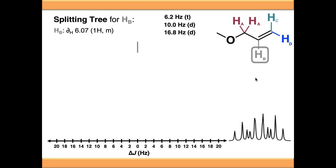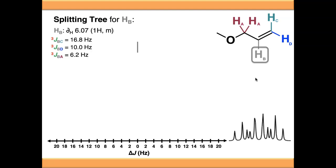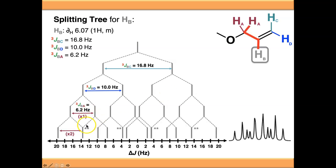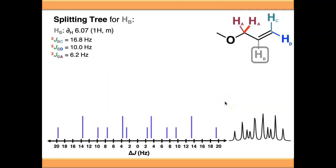If we reverse engineer this and go back into our splitting tree, we're going to take our three J values and convert them into a splitting tree. Starting with the biggest one - 3JBC = 16.8 Hz, then 10 Hz, then 6.2 Hz. We split the singlet by 16.8 Hz to give a doublet, then split against HD to give a doublet of doublets at 16.8 and 10 Hz. Finally, splitting against HA one at a time - against the first and then the second - remembering to add up all coalescing peaks, we end up with something complex. But looking at the signal, it looks reasonably similar. The only bit that differs is the middle where we have two signals that the spectrometer cannot resolve because those lines are so close together.